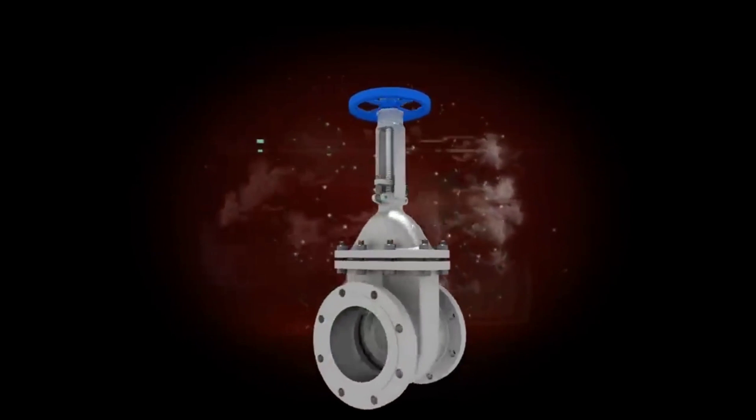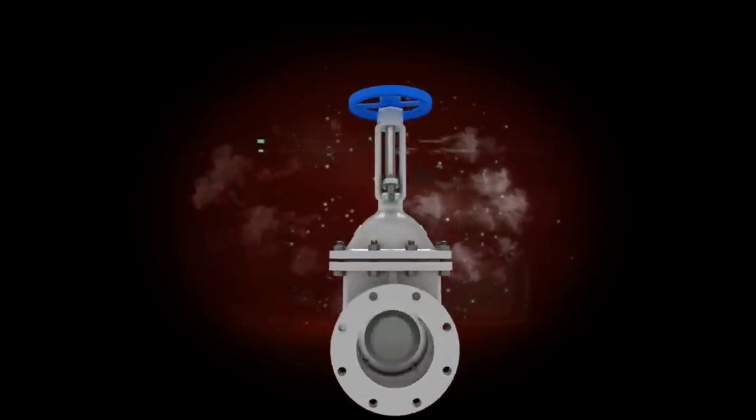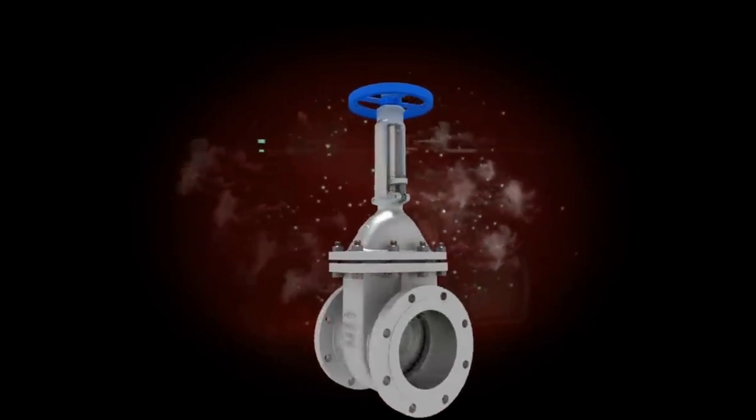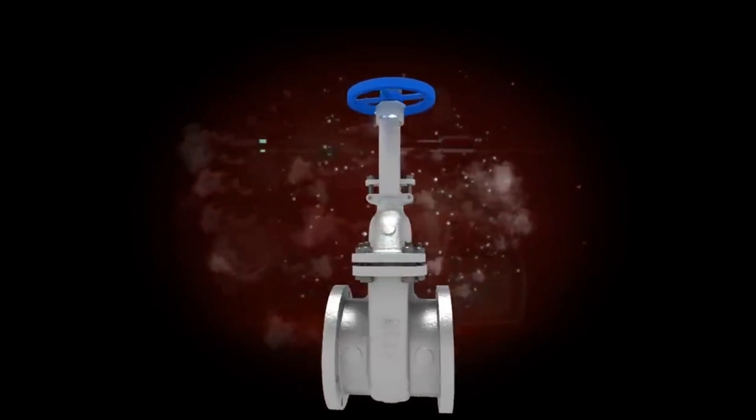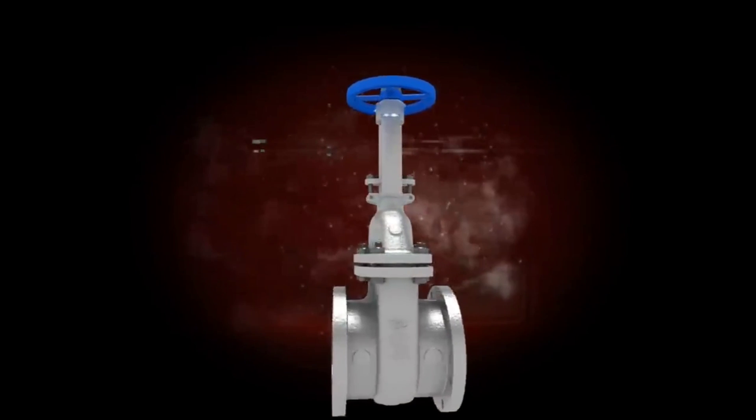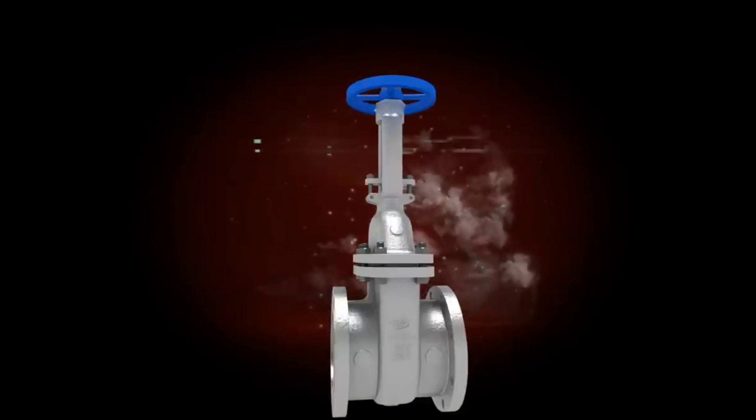A gate valve is a type of valve commonly used for regulating flow in a pipeline. A gate valve is generally used to completely shut off fluid flow or, in the fully open position, provide full flow in a pipeline. Thus, it is used either in the fully closed or fully open positions.